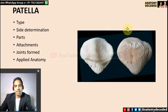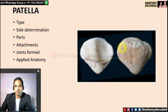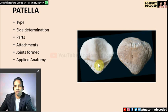Patella is a sesamoid bone which develops under the tendon of quadriceps femoris muscle — the combination of vastus medialis, vastus intermedius, vastus lateralis, and rectus femoris. This is the right patella viewed from the anterior and posterior aspects. Type: sesamoid bone. For side determination: the upper part is broad, lower part is narrow; anterior part is rough, posterior part is smooth.